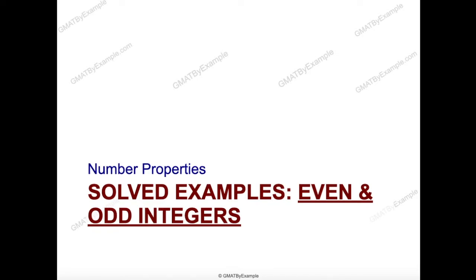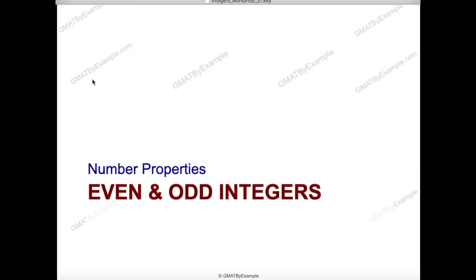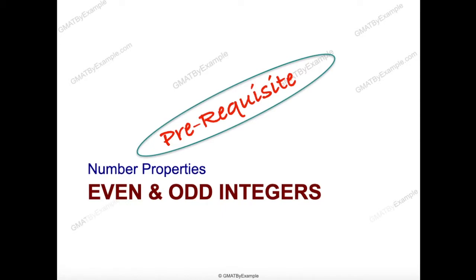Hello everyone. As promised, here is the series of videos with some solved examples on number properties, specifically even and odd properties of integers, along with my secret framework to avoid pitfalls and traps in GMAT exam related to number properties. Please note that there is a small prerequisite for this set of solved example videos: my even and odd basics video posted some time back. If you do not review that previous video, some concepts discussed here will be unfamiliar. The link is above and also in the description.